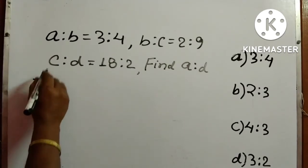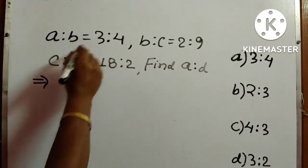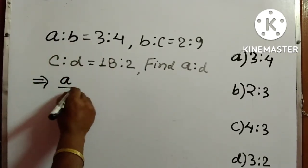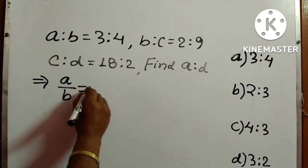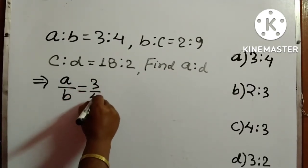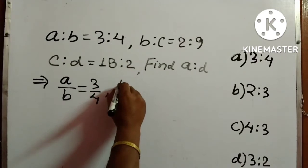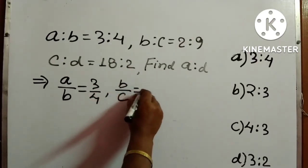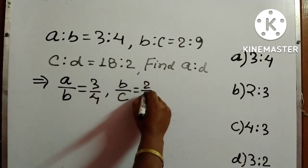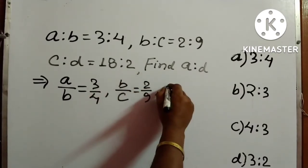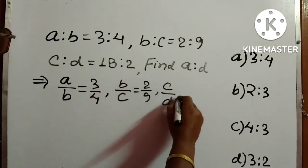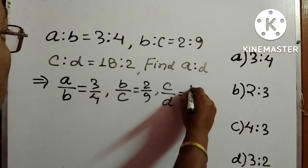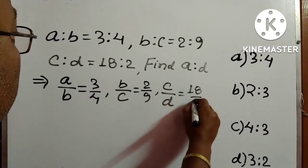In order to solve this one, we can write A is to B as A by B, so 3 is to 4 means 3 by 4. Similarly, B is to C means B by C equals 2 by 9, and C is to D is C by D, which is 18 by 2.